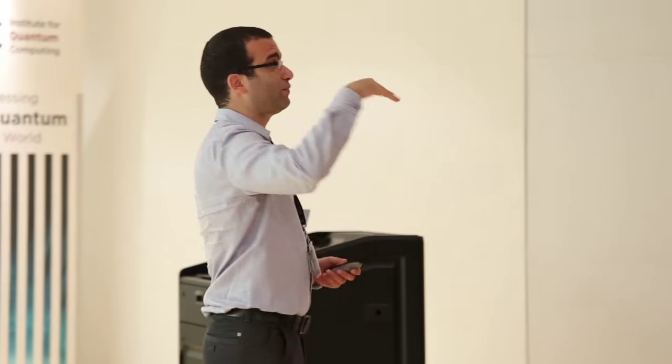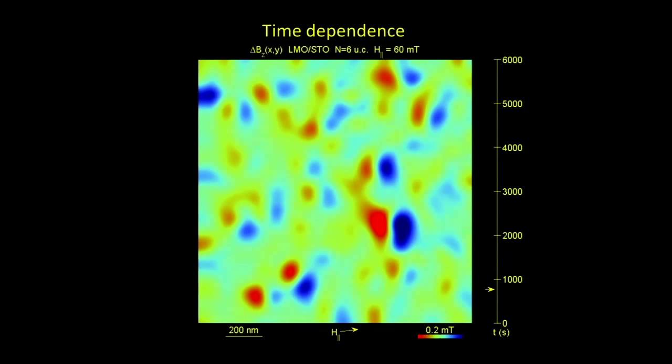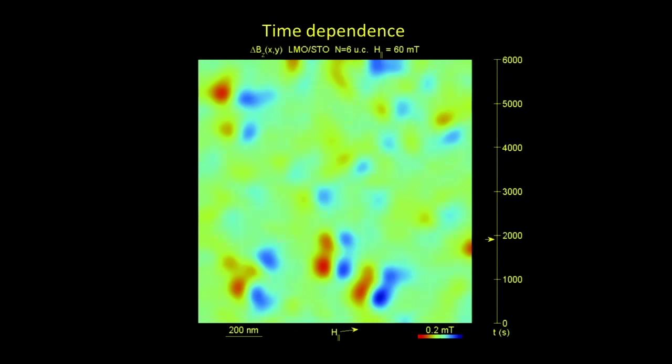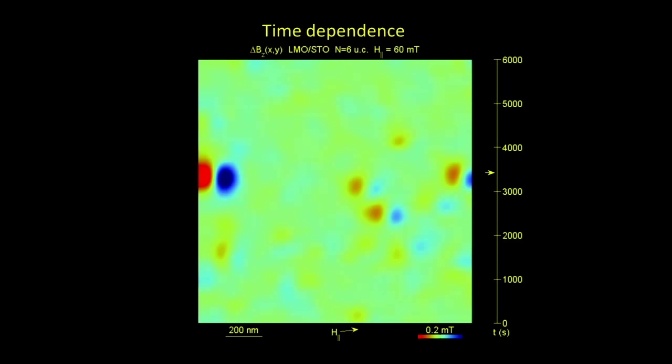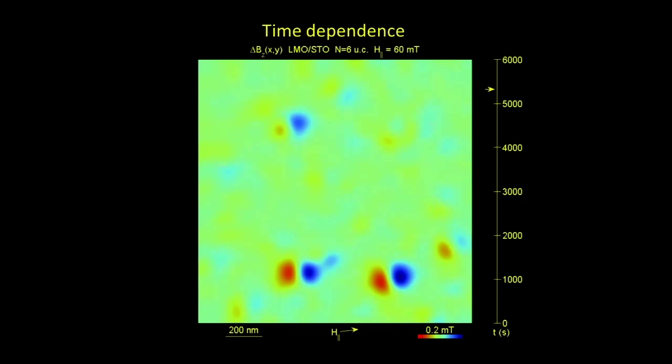Looking at a six-unit-cell sample, sweeping time from a few minutes to about an hour and a half, you see the same sort of dynamics — dipoles switching as time passes — and it seems to carry on for quite a while. This data is about a week or two old, so we haven't yet gone through all the statistics to extract activation energies.